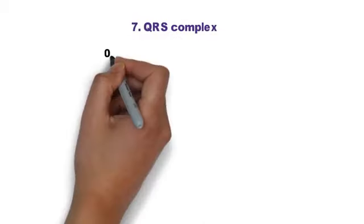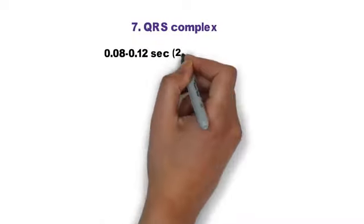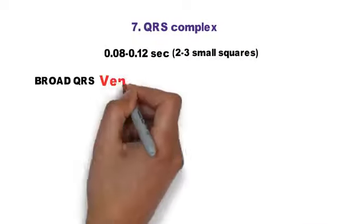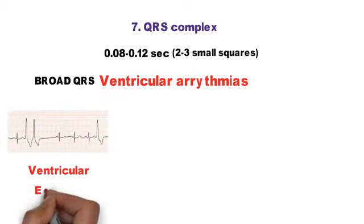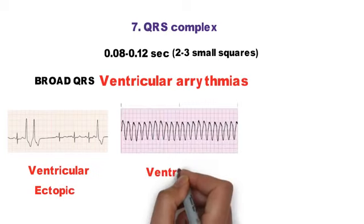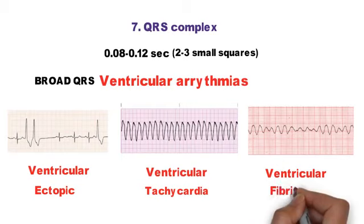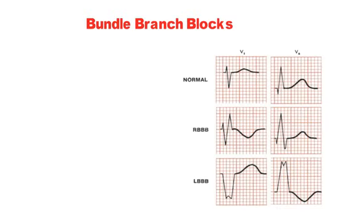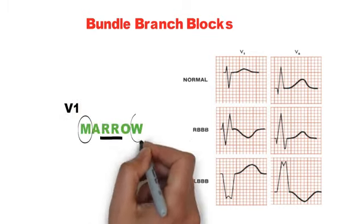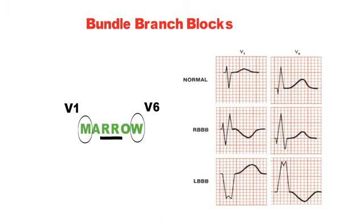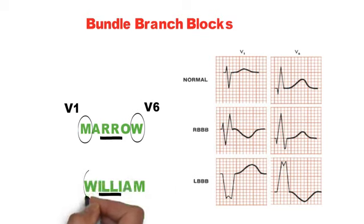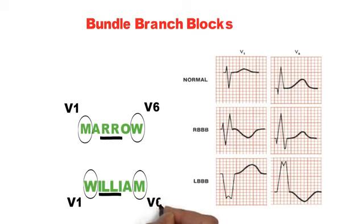Step 7 is QRS complex. Normally it is 0.08 to 0.12 seconds (2 to 3 small squares). It is widened in ventricular arrhythmias — ventricular ectopic, ventricular tachycardia, ventricular fibrillation — or any pathology below the bundle of His, and also in bundle branch blocks. In RBBB there is an M pattern in V1 and W pattern in V6. In LBBB, remembered by the mnemonic 'William,' there is a W pattern in V1 and M pattern in V6.